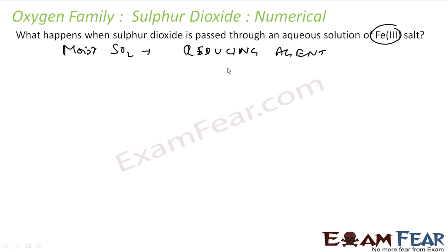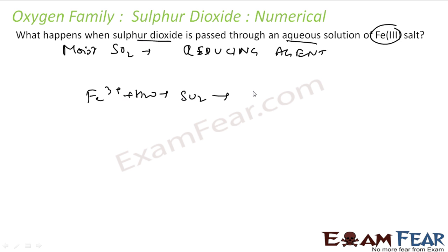Let's solve the reaction. We have Fe3+ in aqueous solution, and Sulphur Dioxide is passed through it. Fe3+ is reduced to Fe2+, and you get SO4 2− and H+ as products.